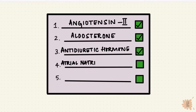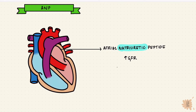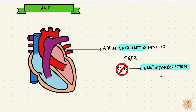Fourth is the atrial natriuretic peptide. This is released from the atria of the heart when the atrial pressure is high. It's a natriuretic, so it increases glomerular filtration rate, but unlike angiotensin II, it doesn't increase sodium reabsorption. It inhibits the renin-angiotensin-aldosterone system, so there's reduced sodium reabsorption, resulting in a loss of sodium in the urine — hence natriuresis.